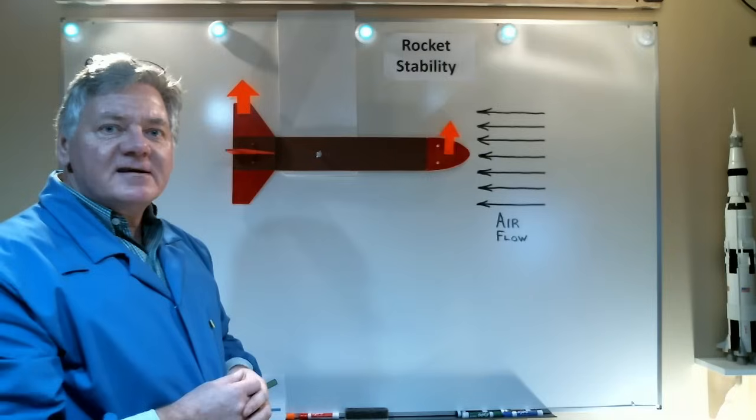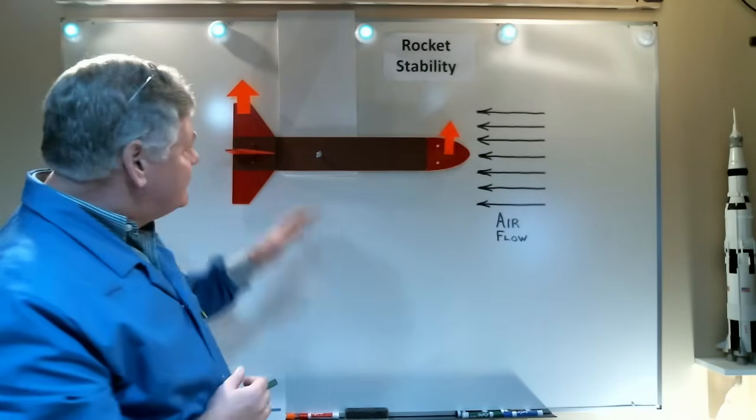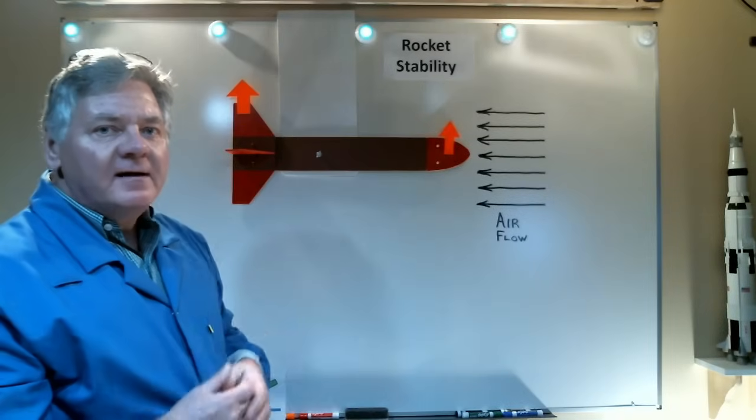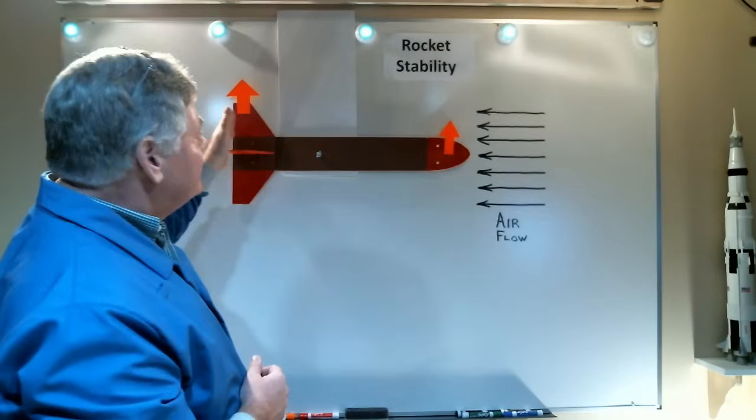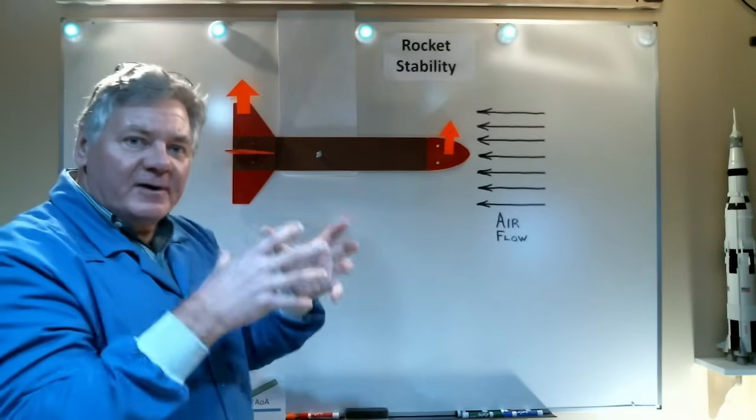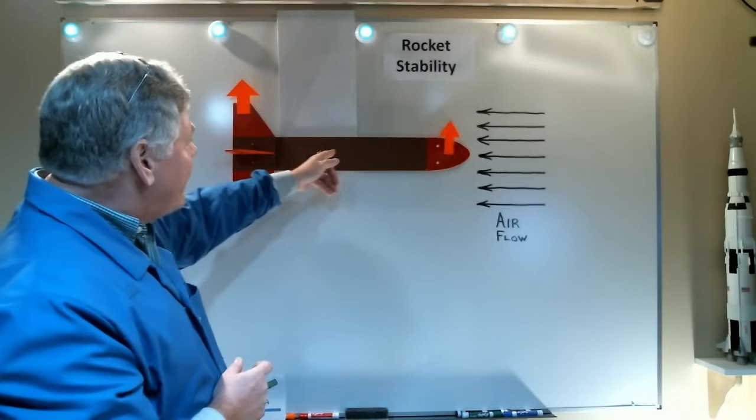Now, there are two things that come into play for stability. It's the center of pressure, which is based on the aerodynamic forces, and center of gravity. We can think of the center of pressure as a balancing point between the nose and tail lift. And that tells us we can centralize that force in one position on the rocket, somewhere along the body tube.